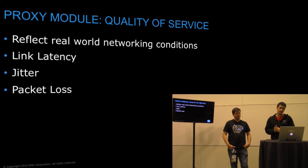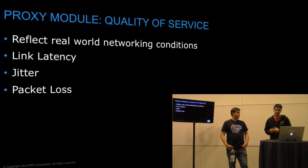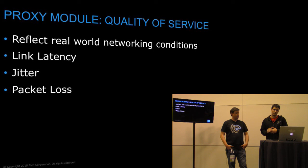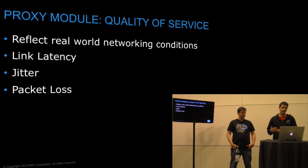The fourth module — we are right now implementing this one and the next one. This is the quality of service module. The idea here is to simulate real-world networking conditions. Users should be able to specify the link latency, add jitter to the network, set packet loss, and different kinds of settings to modify the quality of service of the network.